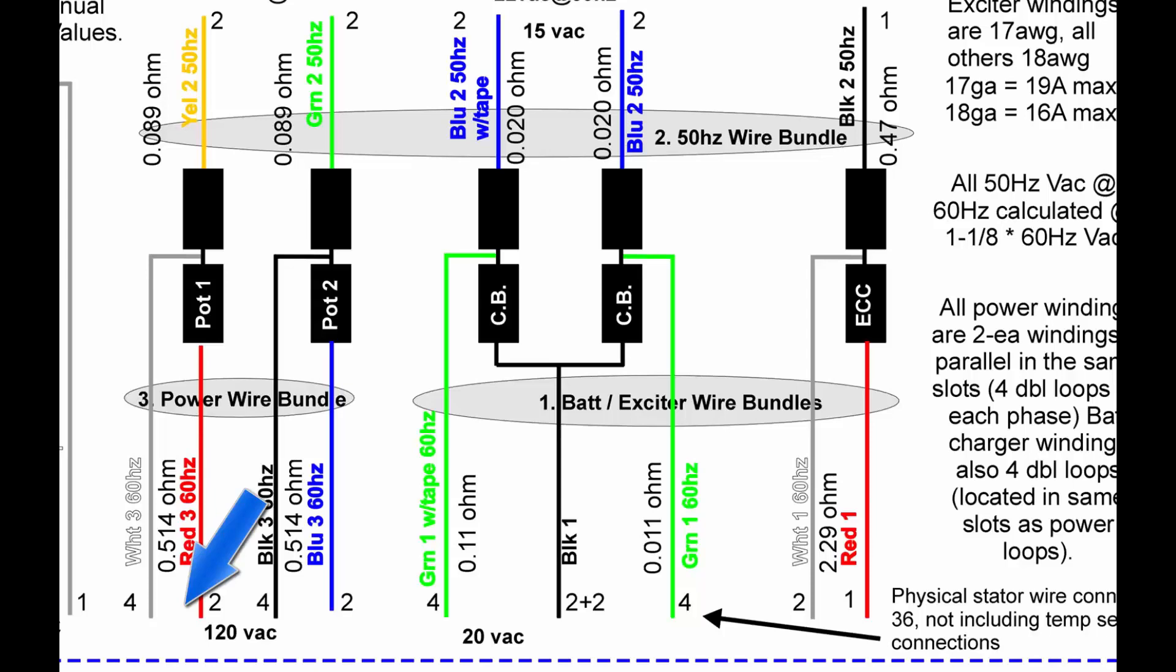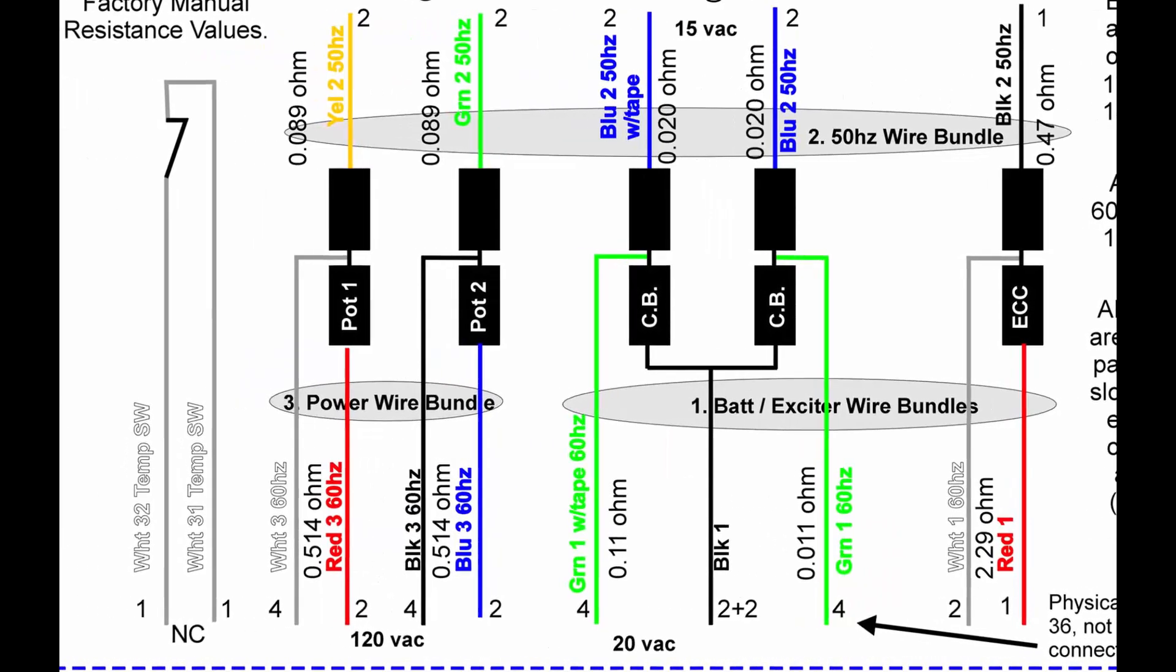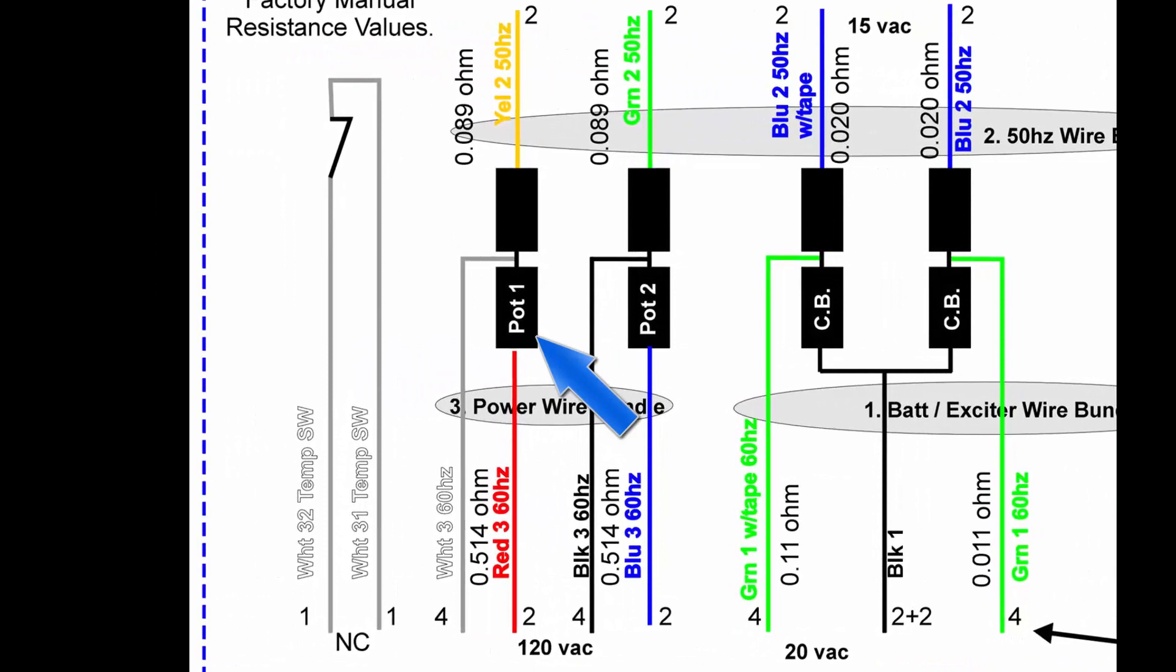For example, pot one is one phase and pot two is the other phase of the primary power windings. If you look at pot one for a minute, the red three at the bottom, when it's connected to the white three, generates 120 volts AC.